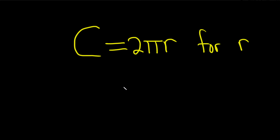In this problem we have what's called a literal equation, and we have to solve it for r. This is actually a super important formula — it gives you what's called the circumference of a circle. So you have to solve for r, which is the radius.